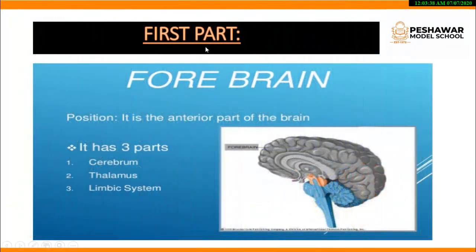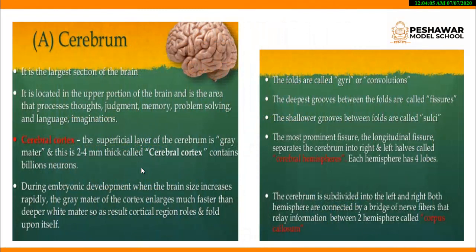Now we move towards the first part of the human brain: the forebrain. Forebrain is the anterior part — the topmost portion — shown here in gray color. It has three parts: cerebrum, thalamus, and limbic system. The cerebrum is the largest section of the forebrain. When we study the structure of the brain, we find that the cerebrum is the part with the most folds. The outer part of the cerebrum is called the cerebral cortex, which contains gray matter on the outer side.